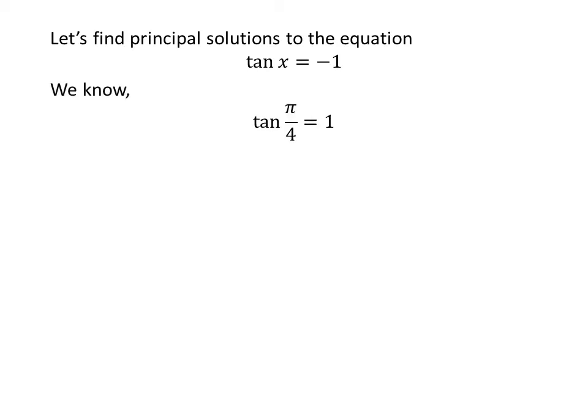We know the value of tangent of pi upon 4 is 1. We also know the famous trigonometry identity: tangent of pi minus a is equal to minus tangent of a.